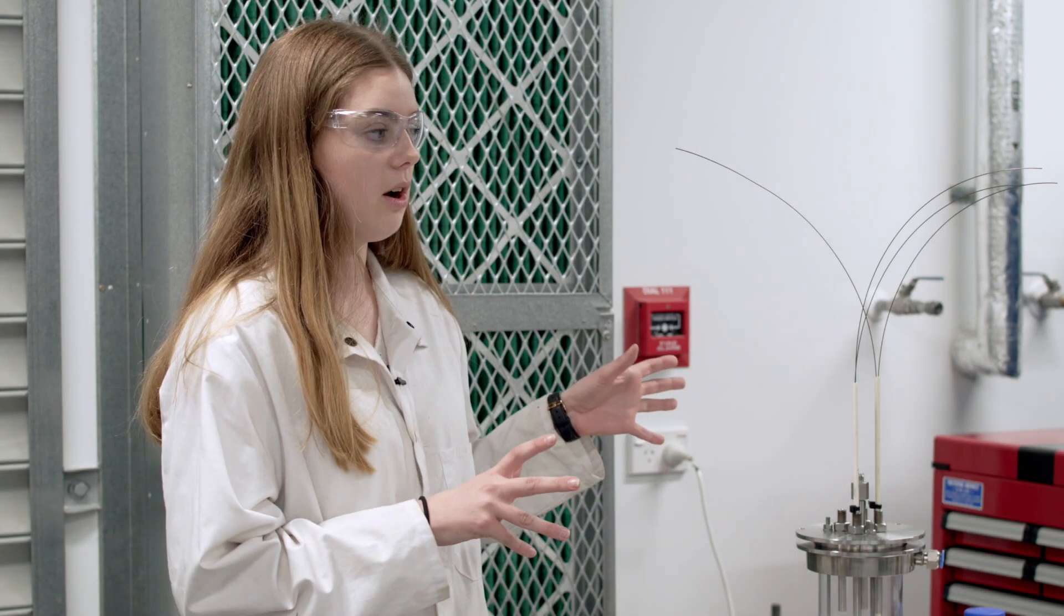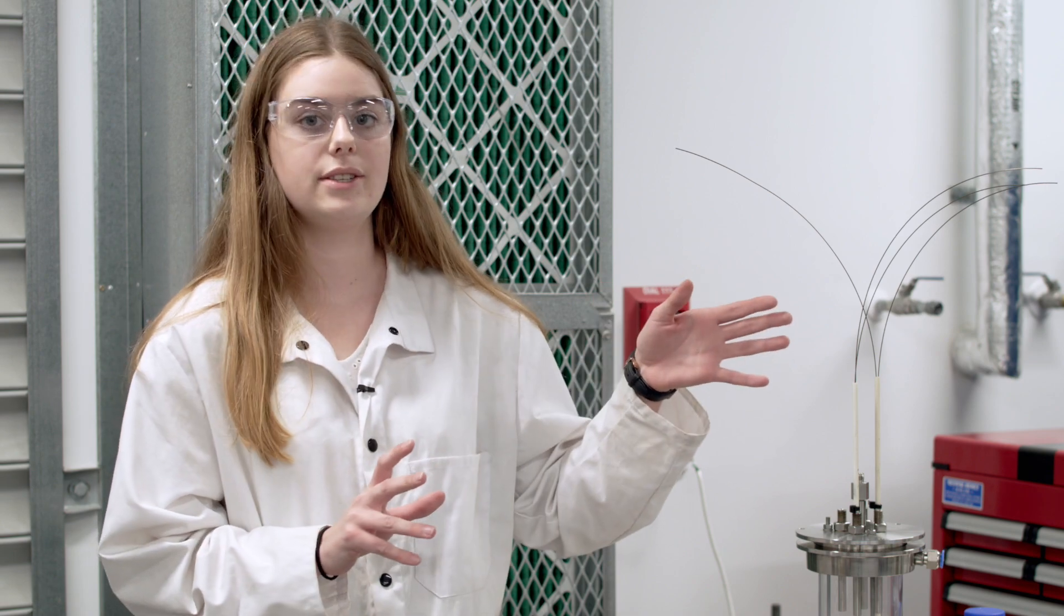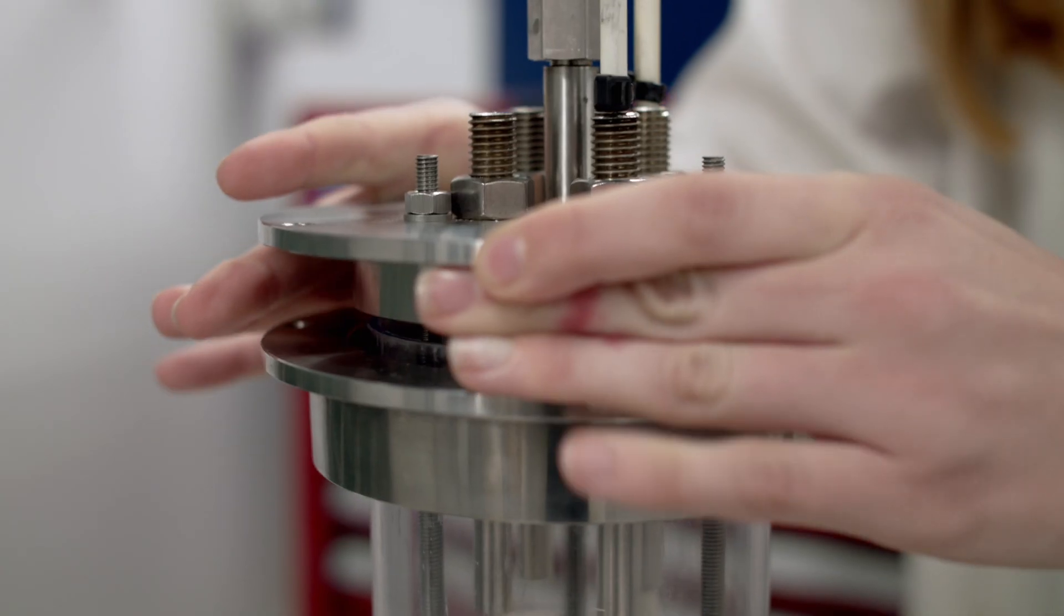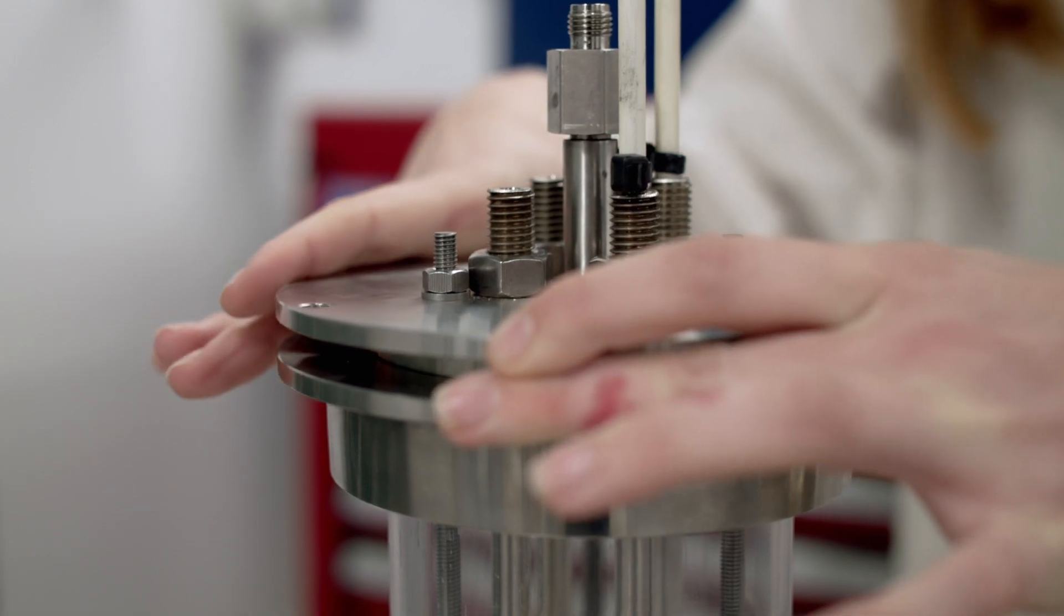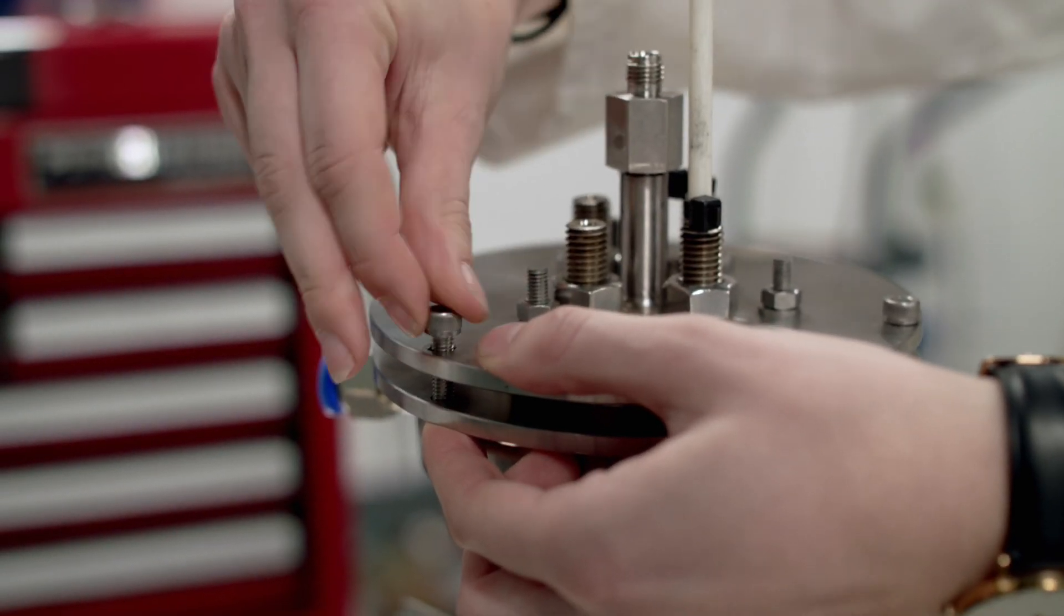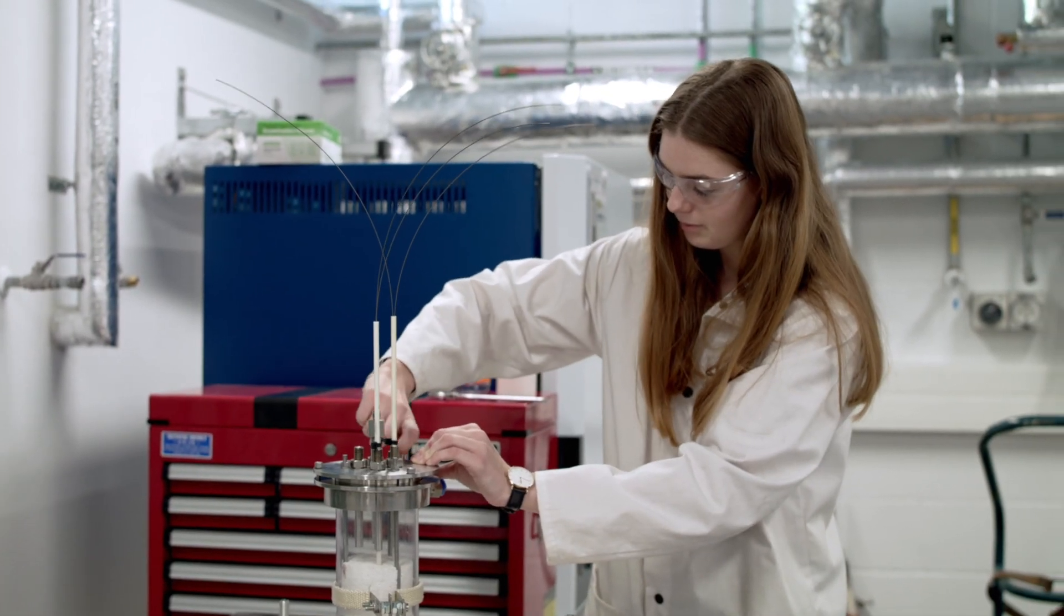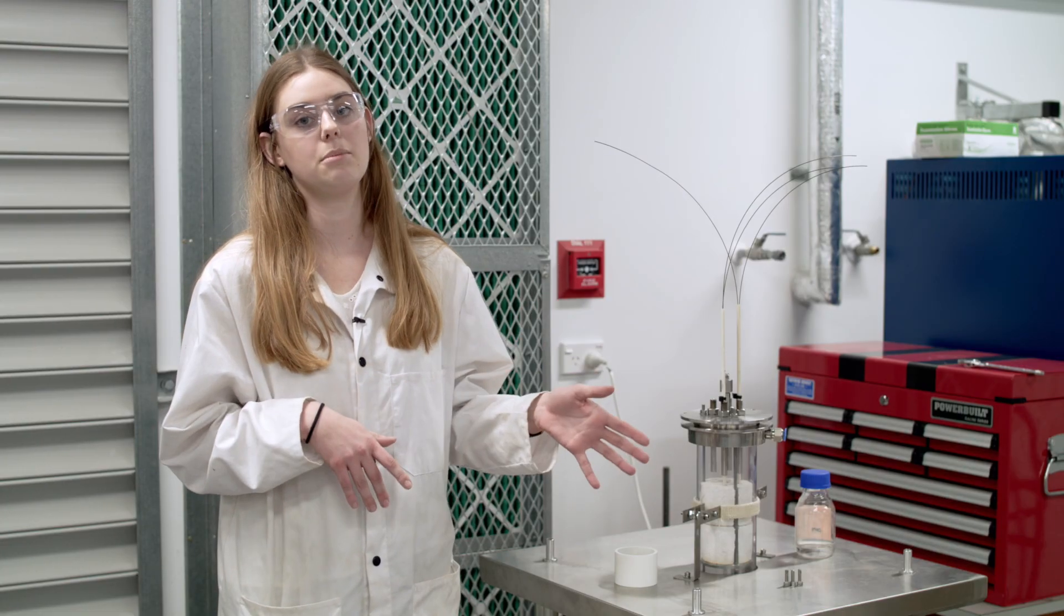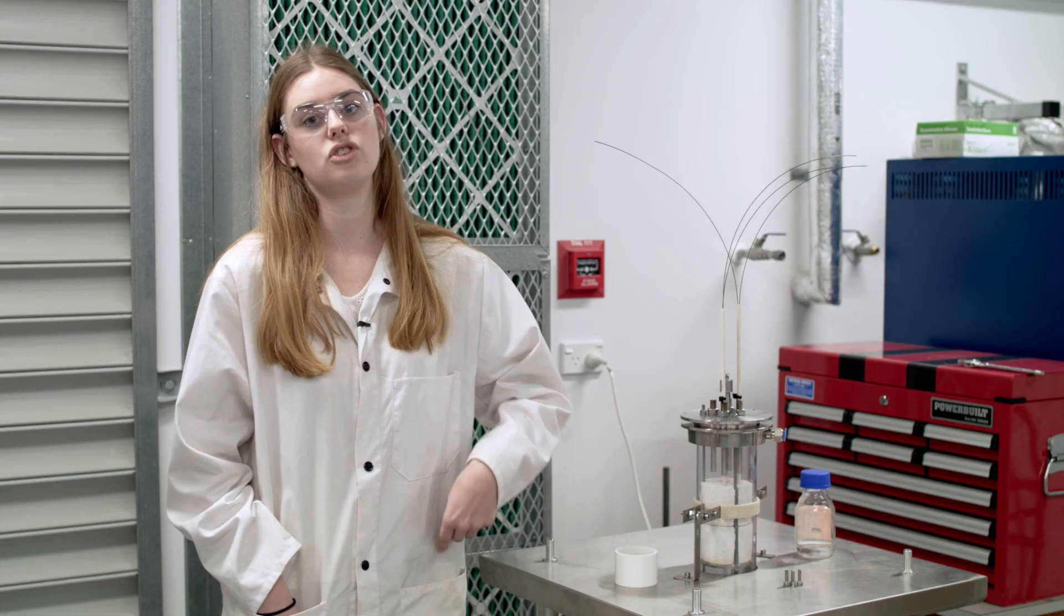So I am measuring the conductivity of metal slag. This is the room temperature experiment before I go into the high-temperature furnace. So I'm using a four-electrode method to measure the conductivity. So we'll be doing this measurement at room temperature and then we will be replicating it in the high-temperature furnace at 1600 degrees.